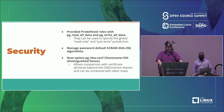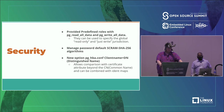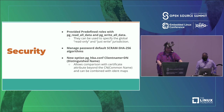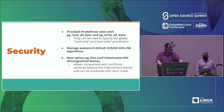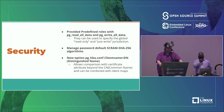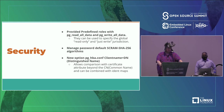Security: predefined roles have been provided — for example, pg_read_all_data and pg_write_all_data — which can be used to specify read-only and write-only access. The default password authentication algorithm is now scram-sha-256, with an md5 option also available in the config file. Also, a new option for the pg_hba.conf file adds clientname= for distinguished names, allowing comparison with certificate attributes beyond common names, which can be combined with identity maps.